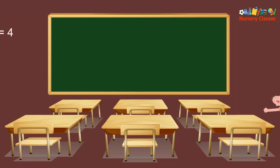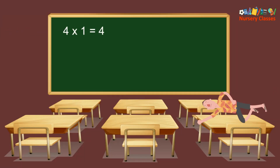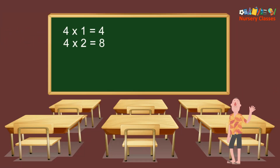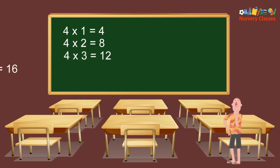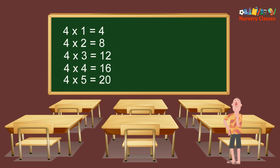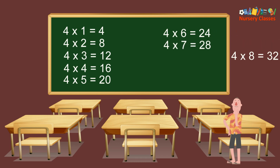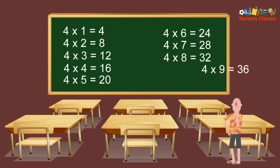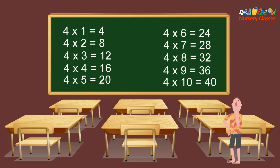4×1 equals 4, 4×2 equals 8, 4×3 equals 12, 4×4 equals 16, 4×5 equals 20, 4×6 equals 24, 4×7 equals 28, 4×8 equals 32, 4×9 equals 36, 4×10 equals 40.